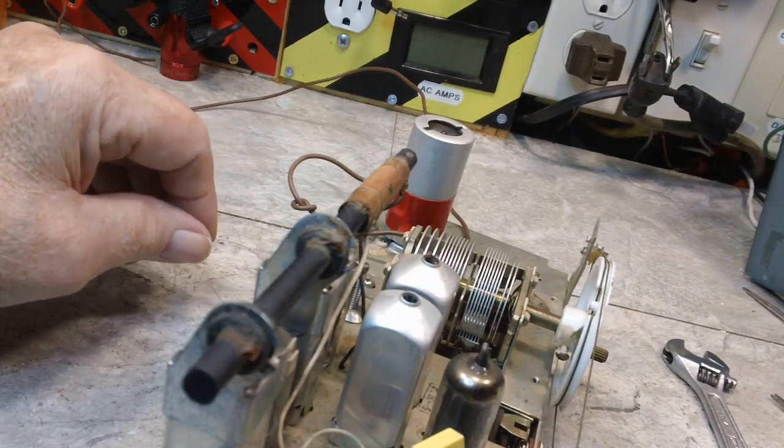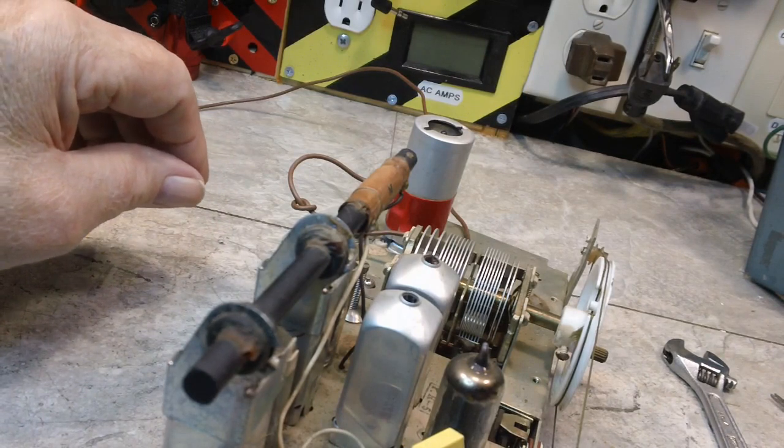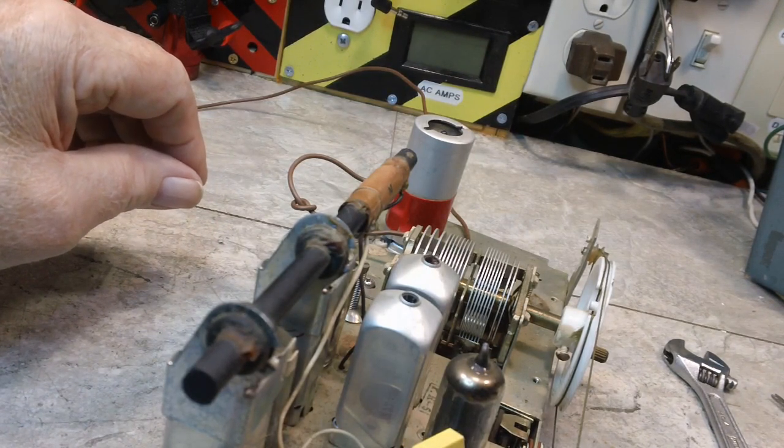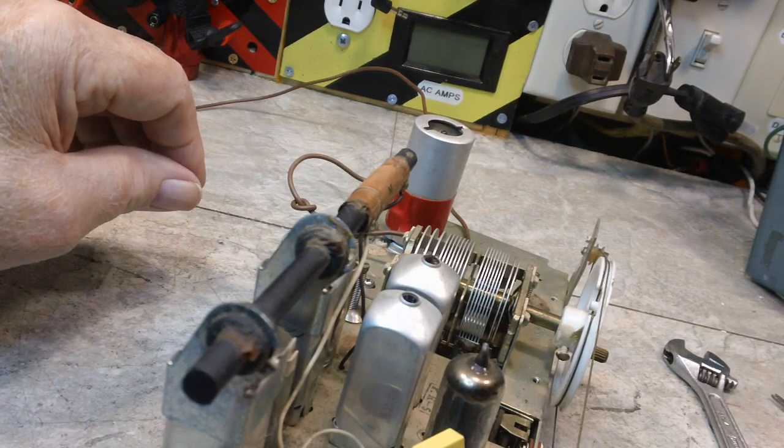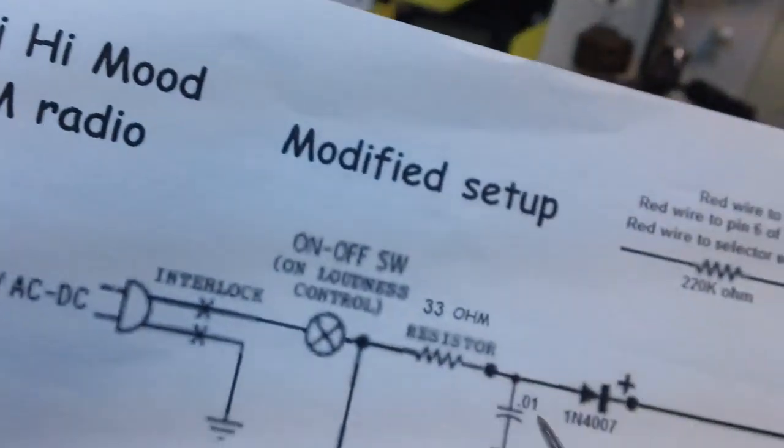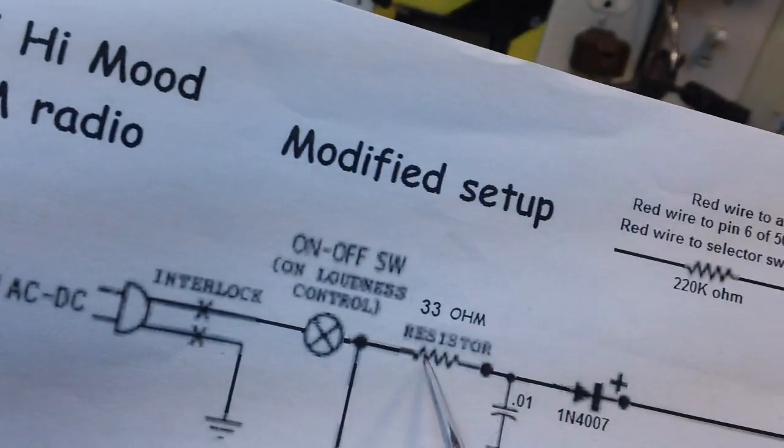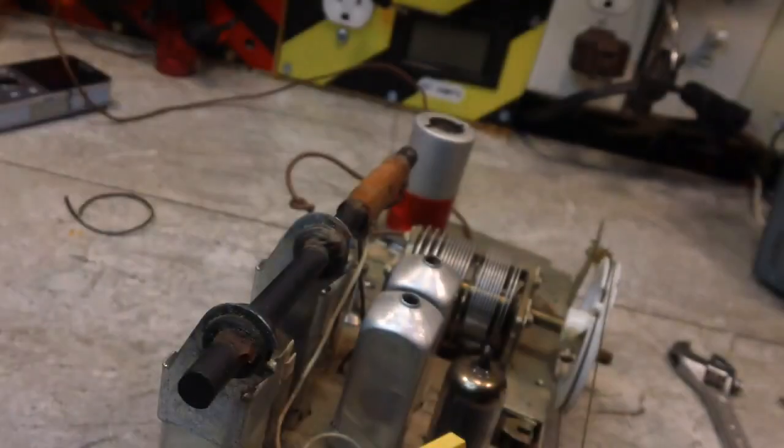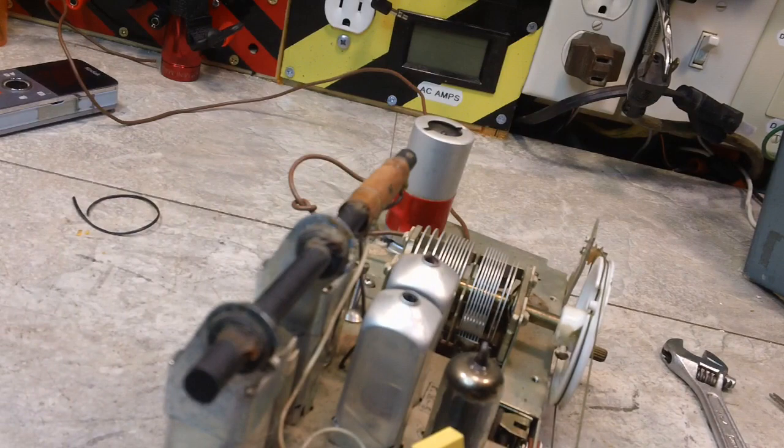Let me get my pointy stick. This is the 33 ohm resistor, comes directly from the switch as it does on here. You can see there's the switch, there's the 33 ohm resistor. Also on that tap there's a red wire, you can see that red wire.